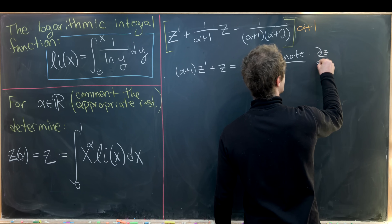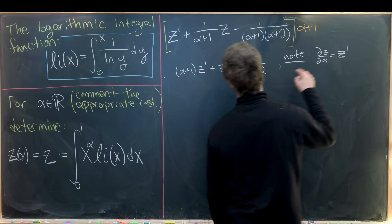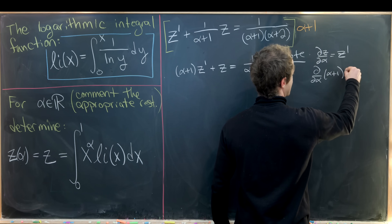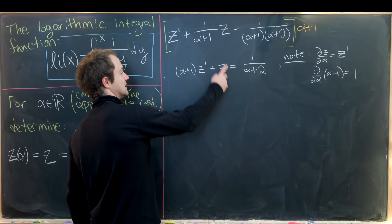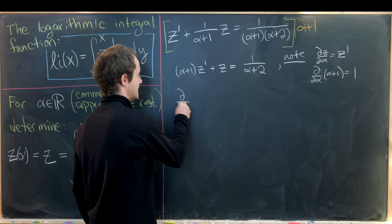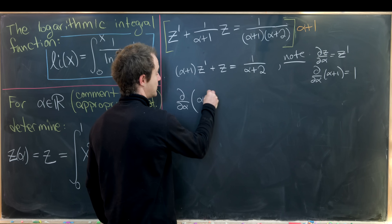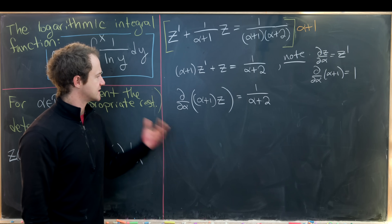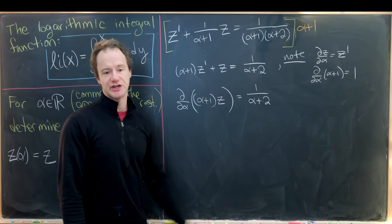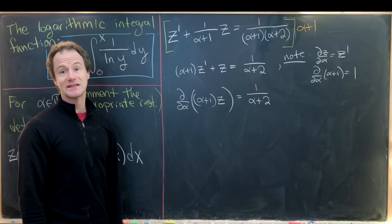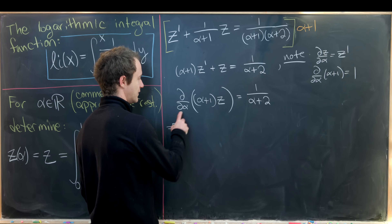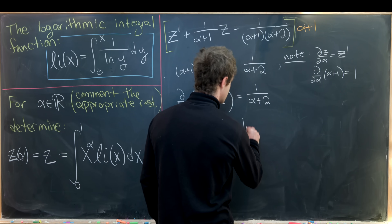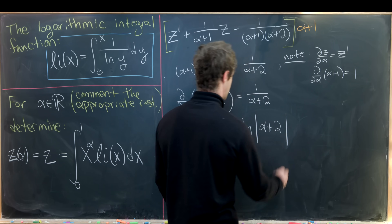Notice that dz/dα = z′ and d/dα(α+1) = 1, so the left-hand side is exactly d/dα[(α+1)·z] by the product rule. So our equation becomes d/dα[(α+1)·z] = 1/(α+2). Taking the antiderivative of both sides with respect to α gives (α+1)·z = ln|α+2| + C.